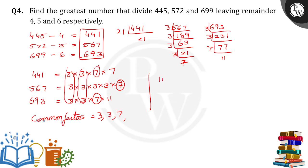So HCF is equal to the product of the common factors: 3 into 3 into 7. 3 times 3 is 9, 9 times 7 is 63.